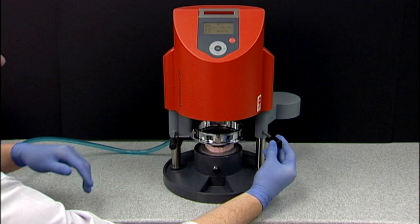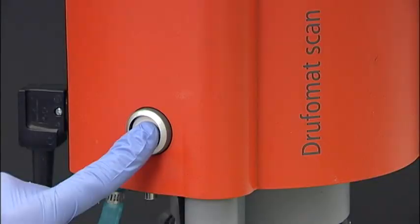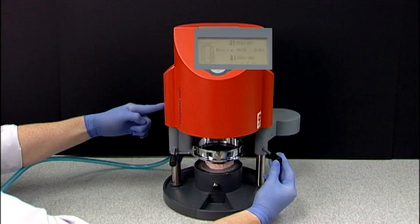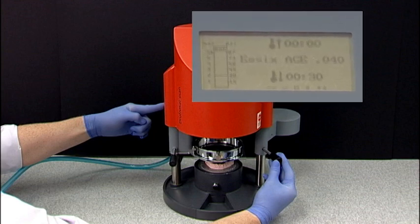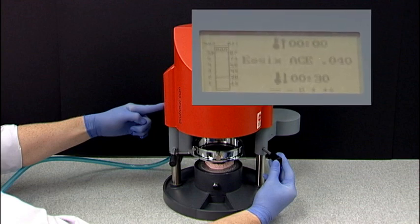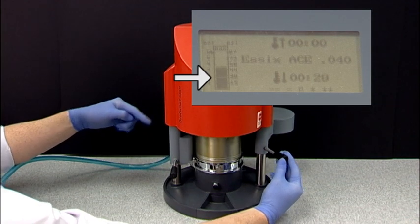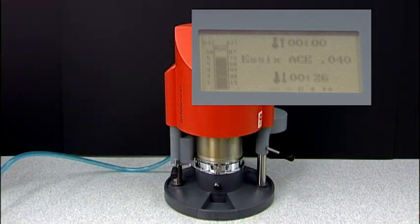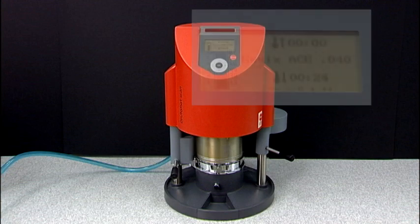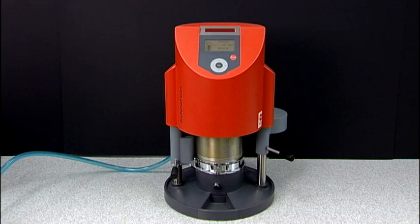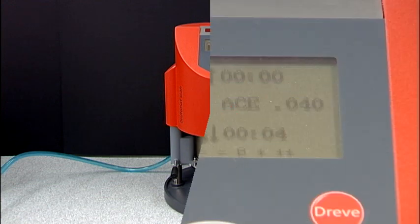The lever is spring-loaded. Be sure to pull past that point and hold while simultaneously pressing the white button on the left side of the Drufomat. Continue holding the lever on the right side while pushing the white button on the left side until you hear a long beep and the pressure bar on the Drufomat screen rises to level 2. You can now release both the lever and white button at the same time. The cooling process has started.